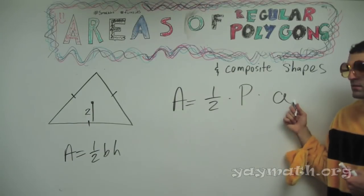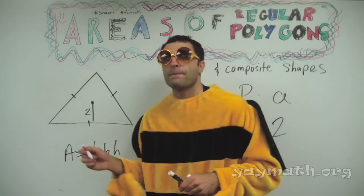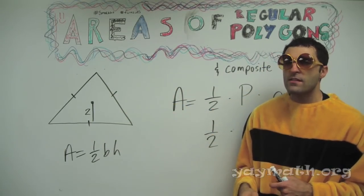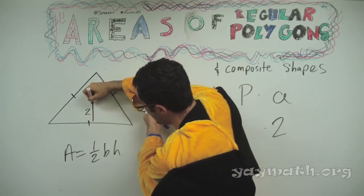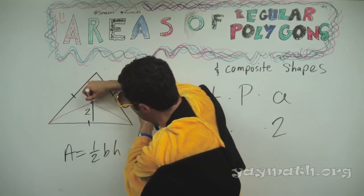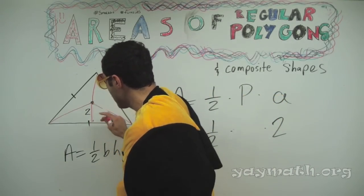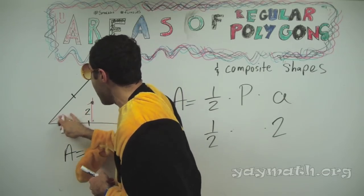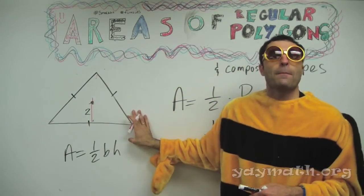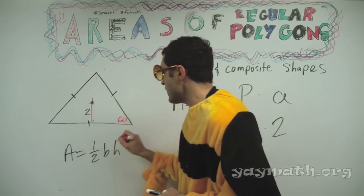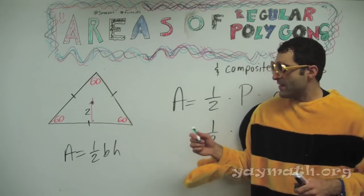Do we know anything already? We know the apothem — you can put two in. So one-half times... we need the perimeter. We could do 360 divided by how many — in this case, three triangles. So I like three. You divide by the number of sides. However, there's a quicker way. For an equilateral triangle, each angle must be the same, making it 60 degrees. Each of these angles is 60.